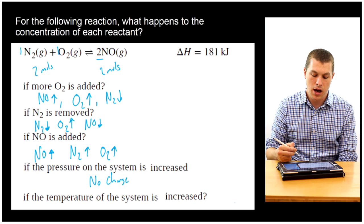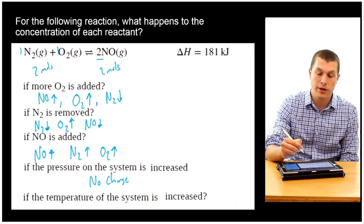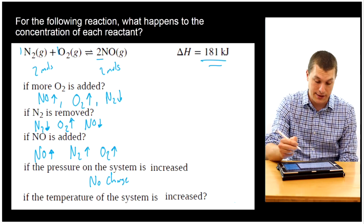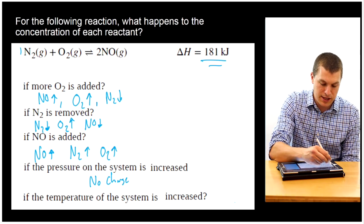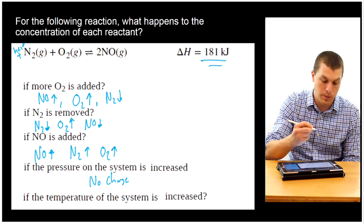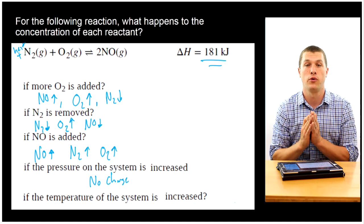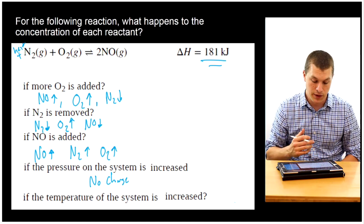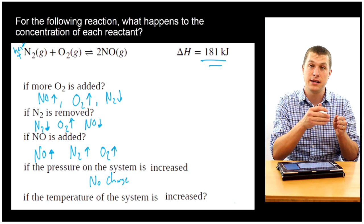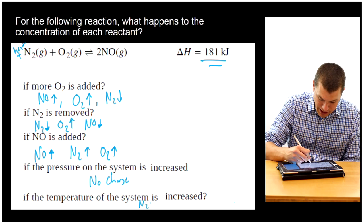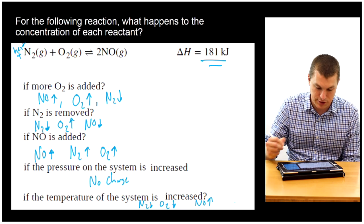Last example: if the temperature of the system is increased, this turns out to be an endothermic reaction — we can tell because our enthalpy is positive. For endothermic reactions, heat is a reactant; we need heat to get the reaction to go forward. For exothermic reactions, heat is a product. So if I increase heat, I'm adding to the left side, and it's going to shift the equilibrium to the right side. That means my nitrogen concentration is going to drop, my oxygen concentration is going to drop, and my nitrogen monoxide concentration is going to increase.